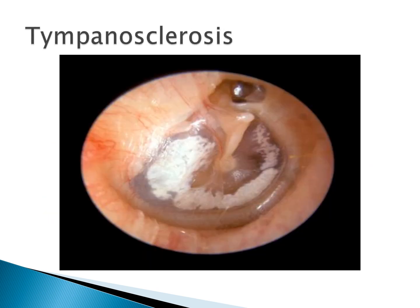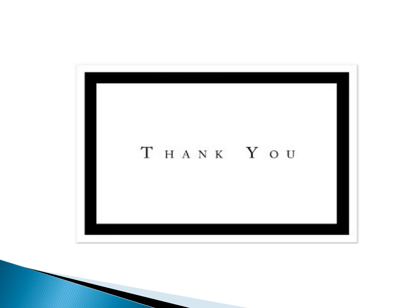In this figure, we see tympanosclerosis — white patches are clearly visible over most of the tympanic membrane, anterior and posterior and inferior to the handle of malleus. Thank you.